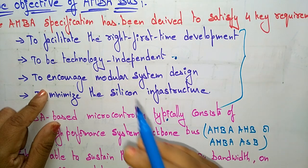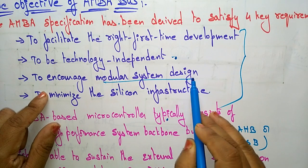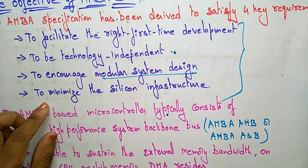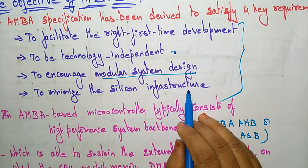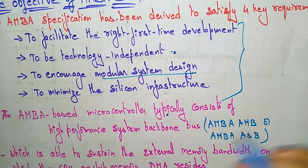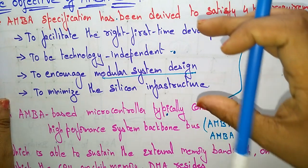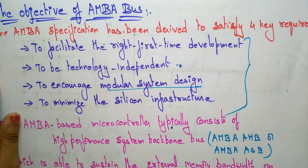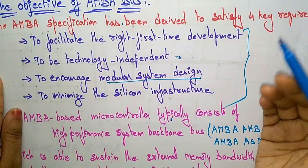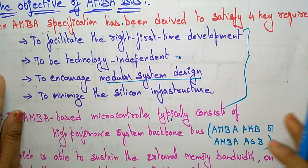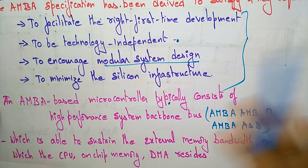The modular system design supports development of peripheral libraries. The fourth key requirement is to minimize the silicon infrastructure required to support efficient on-chip and off-chip communication for both operations and manufacturing test. To summarize: AMBA facilitates right-first-time development, is technology independent, ensures highly reusable peripherals, encourages modular system design, and minimizes silicon infrastructure.